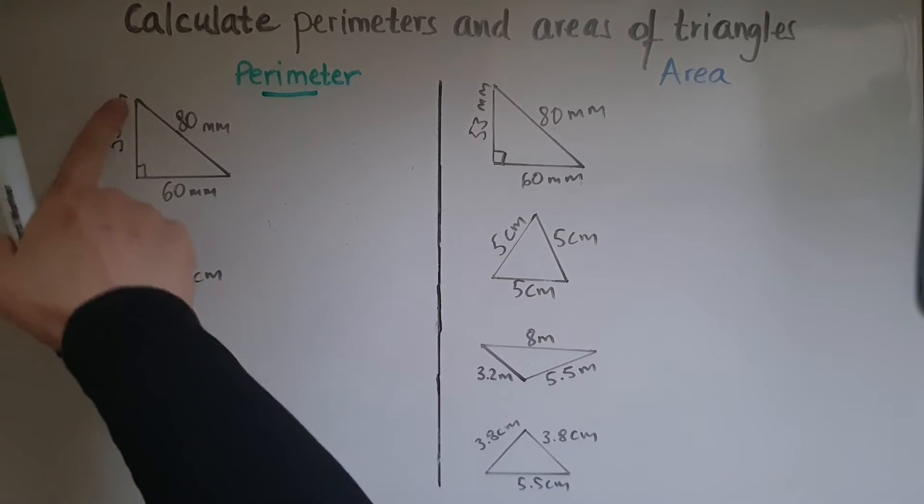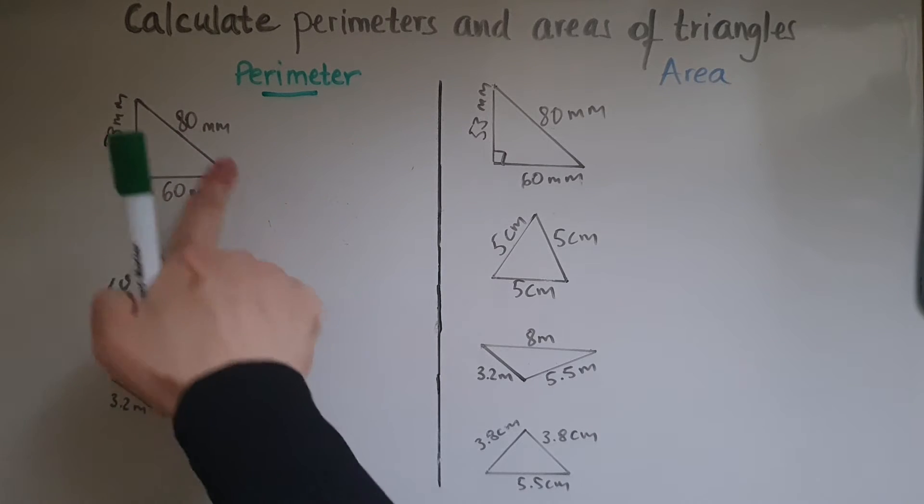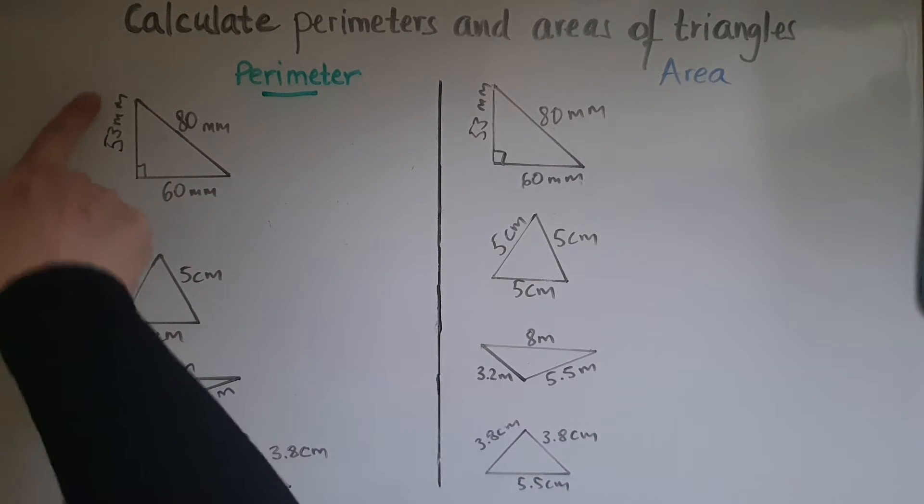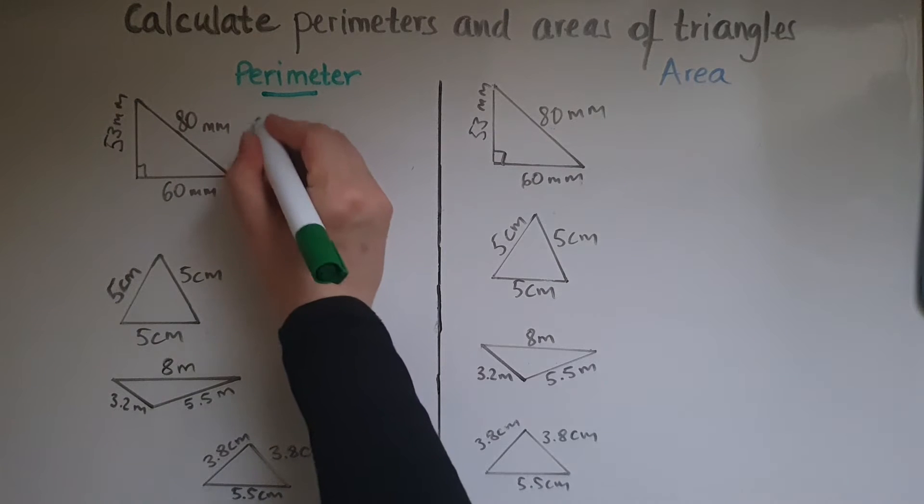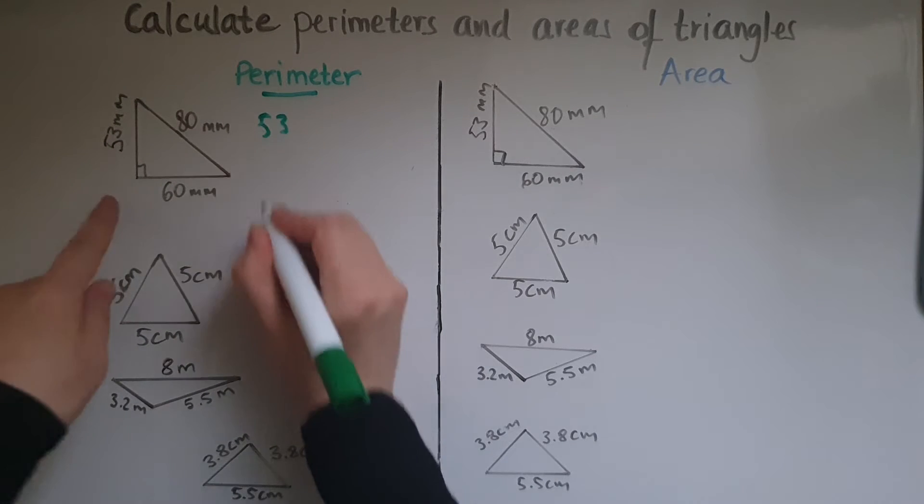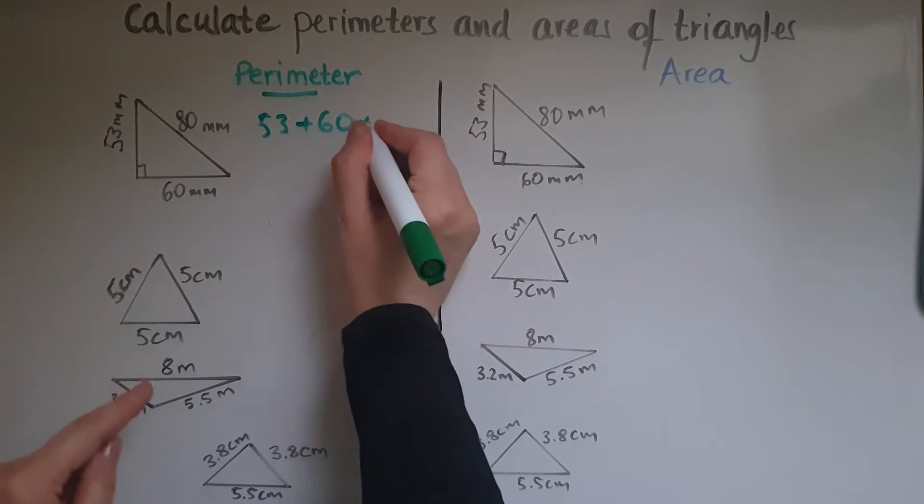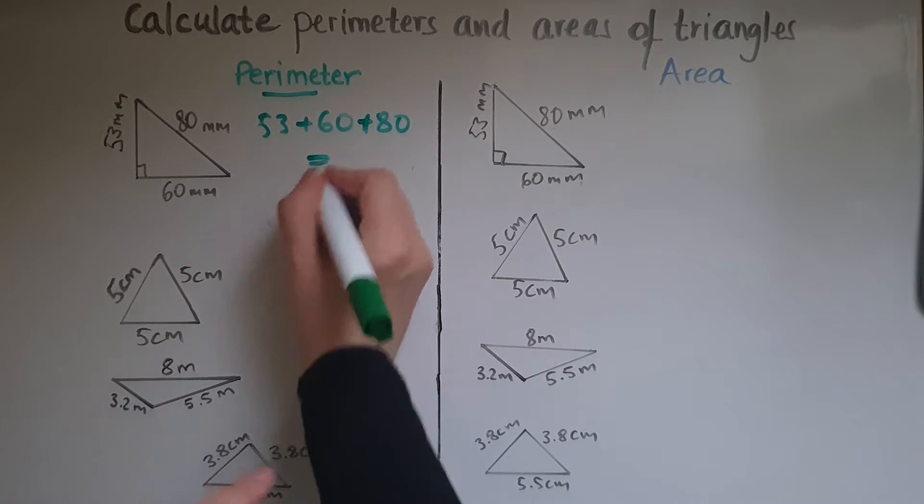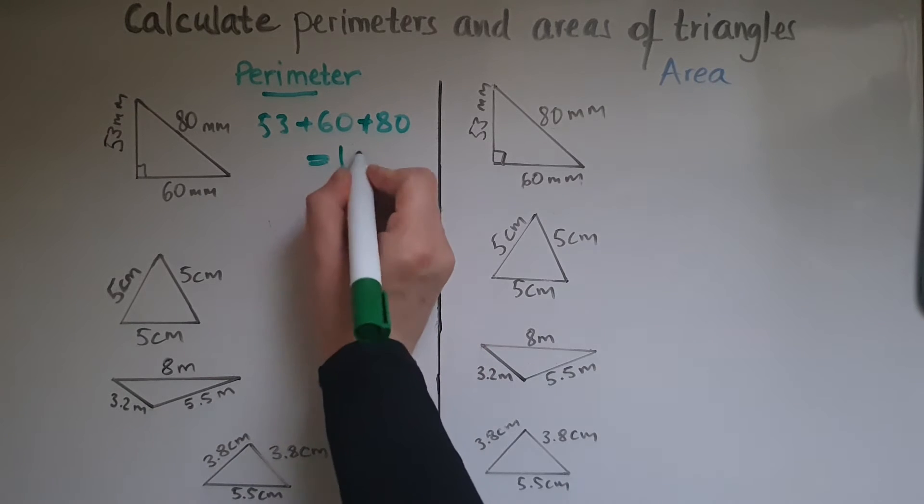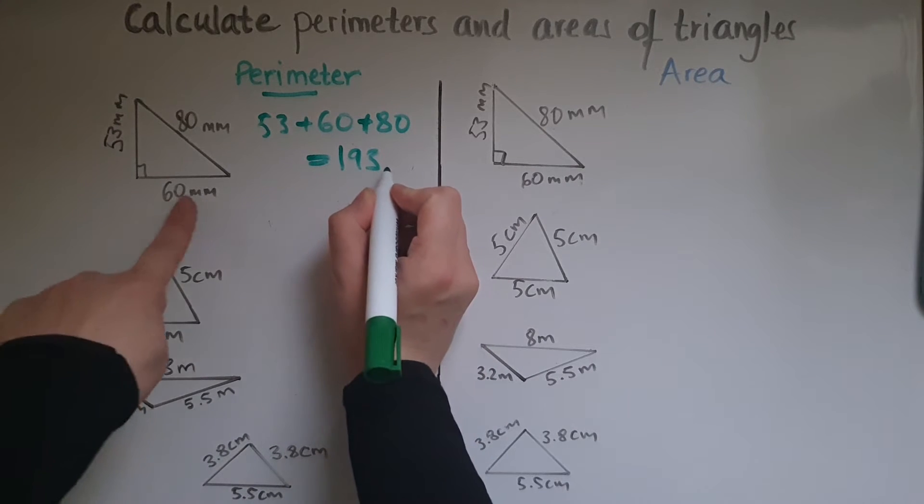So going around the shape and adding all these sides. So 53, 60, and 80. That equals 193 millimeters.